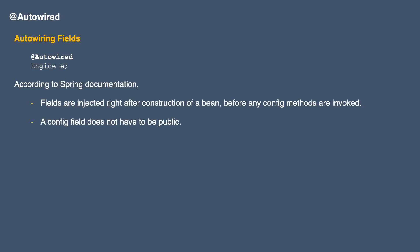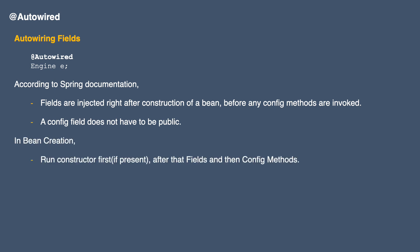Moving ahead, we have autowiring fields — it will look something like this. According to Spring documentation, fields are injected right after the construction of the bean, before any config methods are invoked. So when a bean is created, the constructor runs first if there is one, then field configuration happens before invoking any methods inside the class. We also don't need to make fields public for autowiring — it will work without any public modifier.